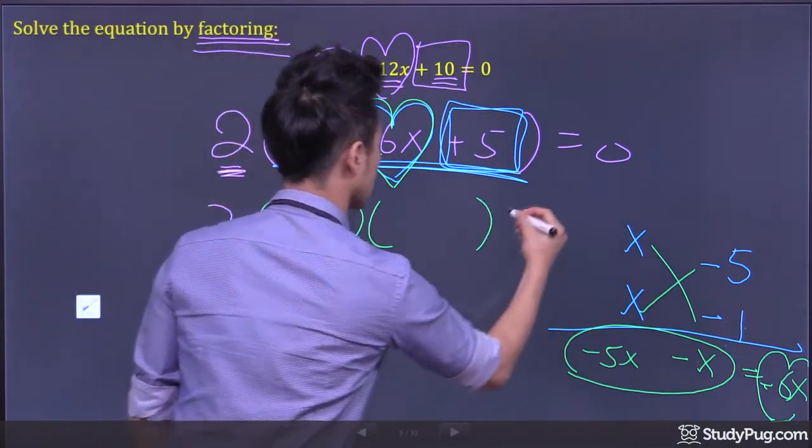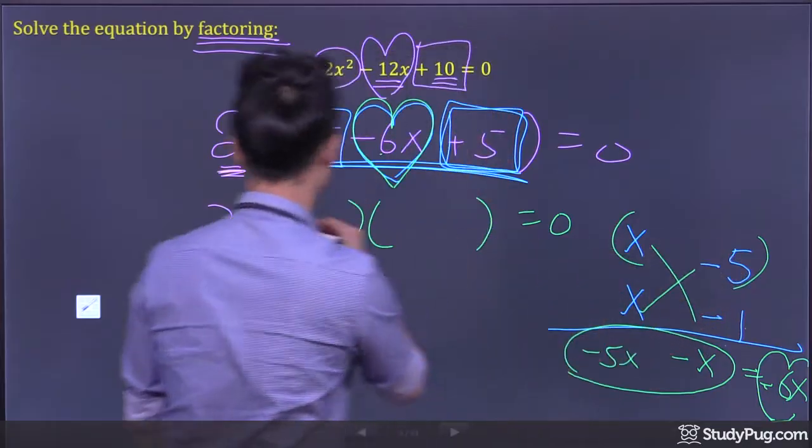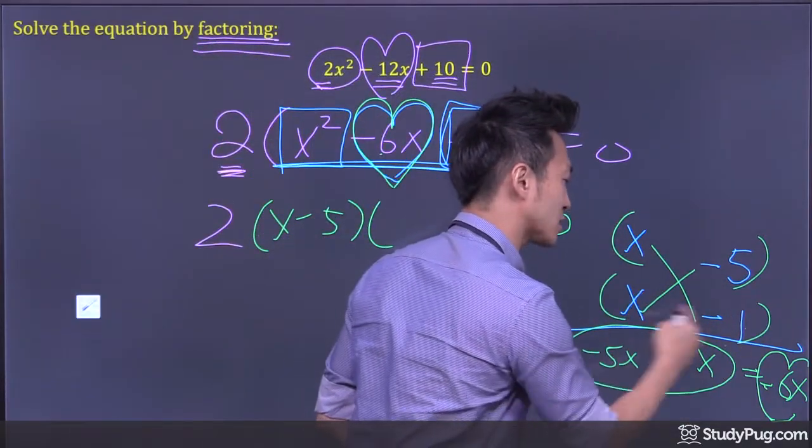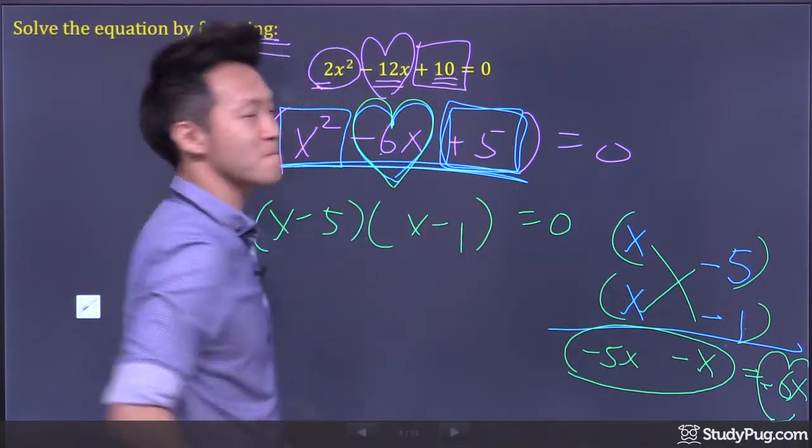So now, two factors. First factor is x - 5. Second factor is x - 1.